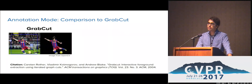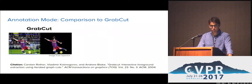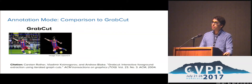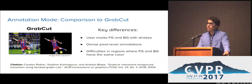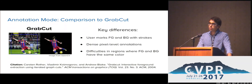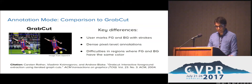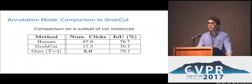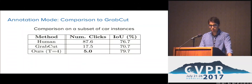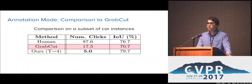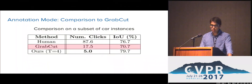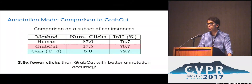We also compare to GrabCut, which is a segmentation model commonly used in annotation tools. Users of GrabCut mark foreground and background regions with strokes, and the model then generates a segmentation using these strokes as user constraints. We compared on a subset of car instances already annotated by the human annotator. We asked two in-house users to use GrabCut to annotate these instances as well. These annotators reported problems obtaining accurate segmentations, while the number of clicks they required was much higher than with our model.